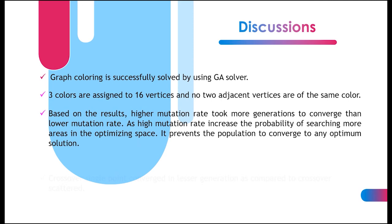As high mutation rate increased the probability of searching more areas in the optimizing space, it prevents the population from converging to any optimum solution.